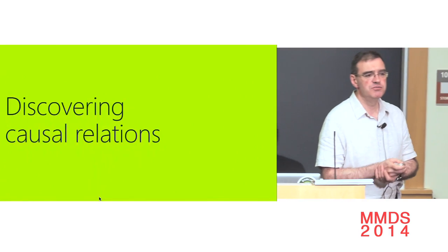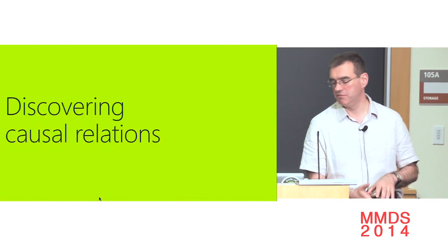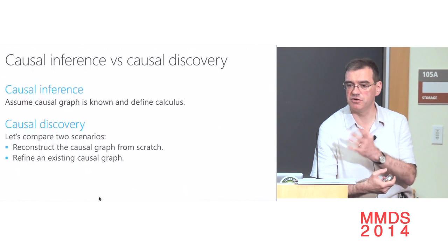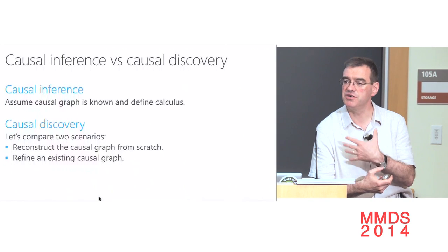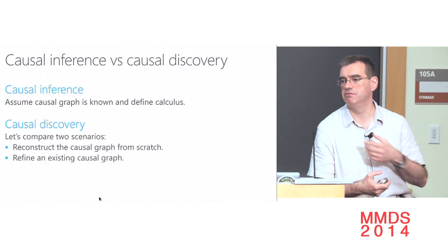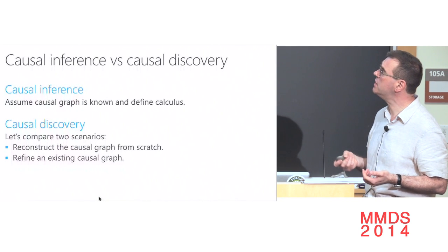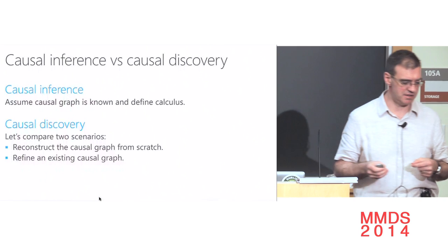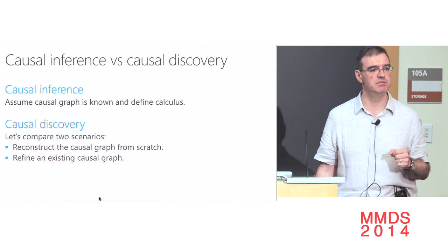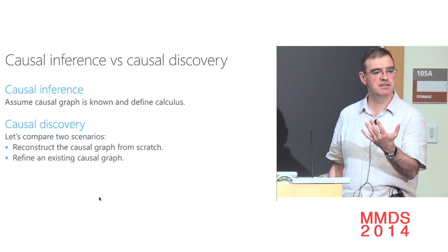Now the last section: discovering causal relations. In my work I was assuming the graph of causes and effects was pretty much known. But in many data mining problems you want to discover the causes and effects, because causal relationships help us predict the outcome of actions we could take. I want to oppose two scenarios: first, reconstructing the causal graph from scratch — is it possible? Second, given some knowledge about the causal graph, can we refine it and make it better?